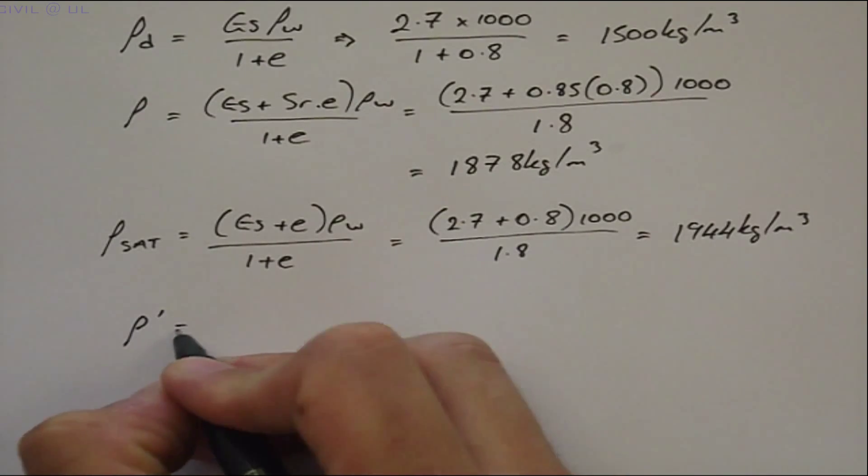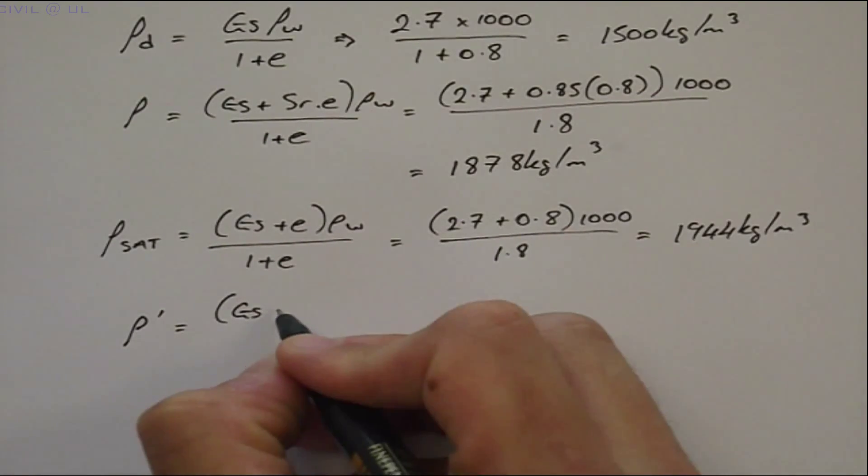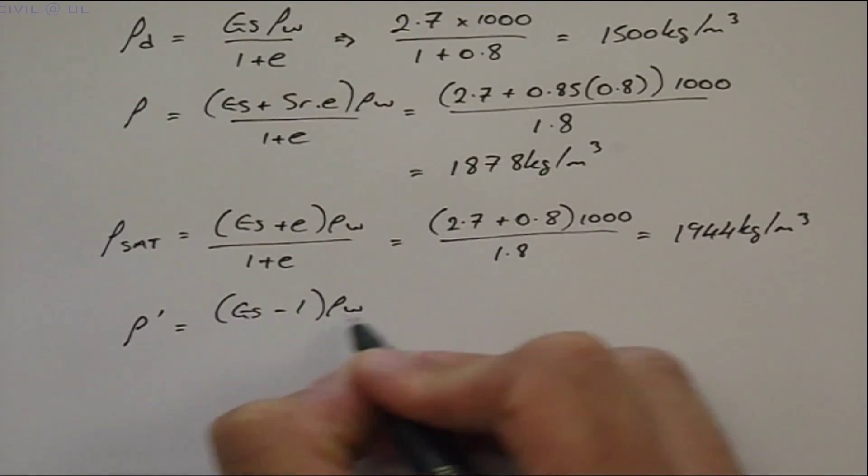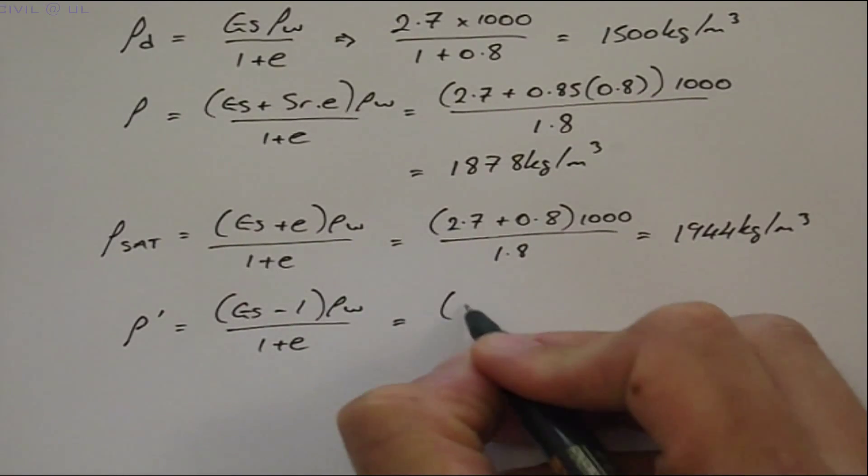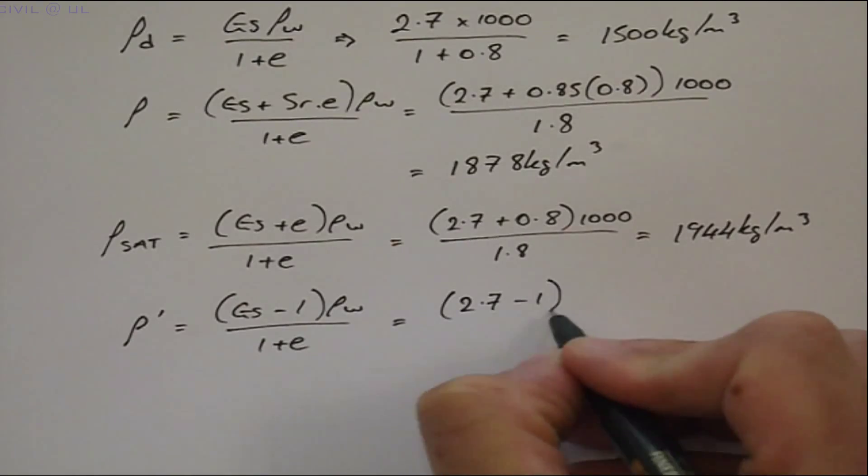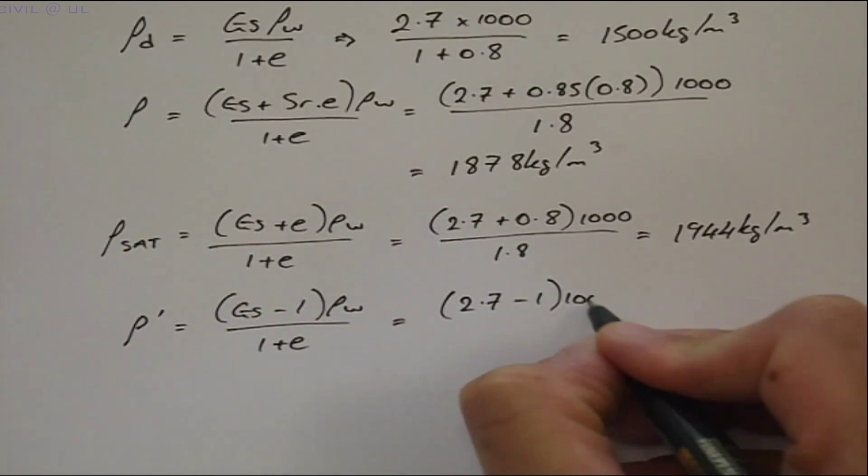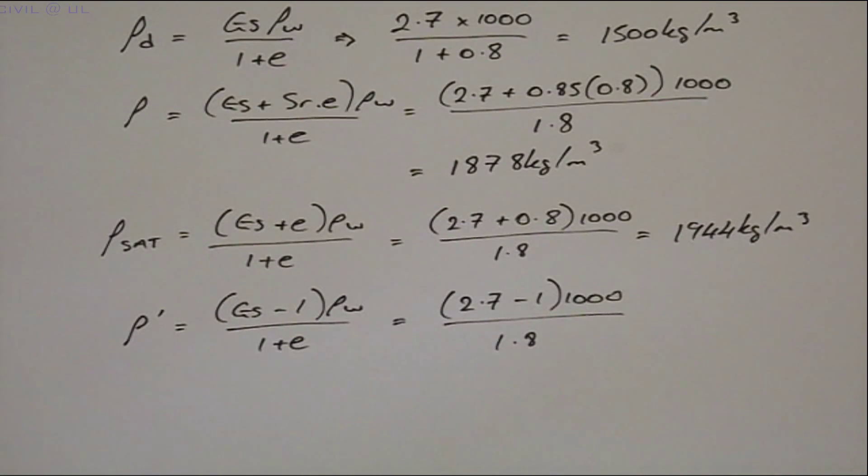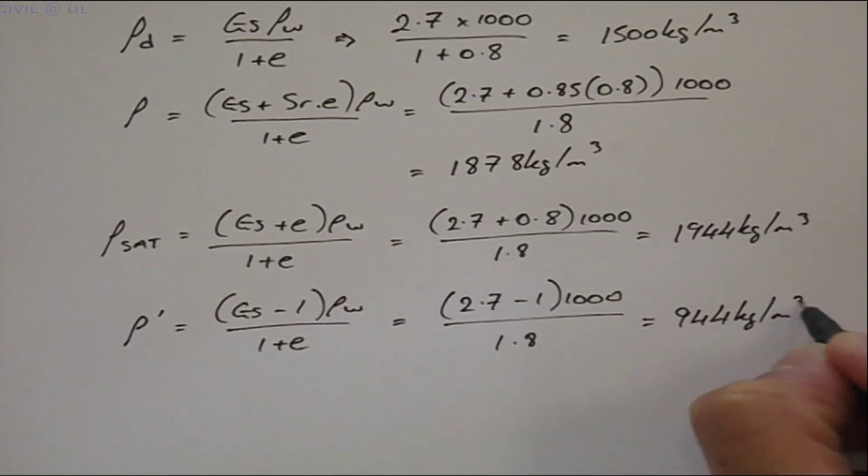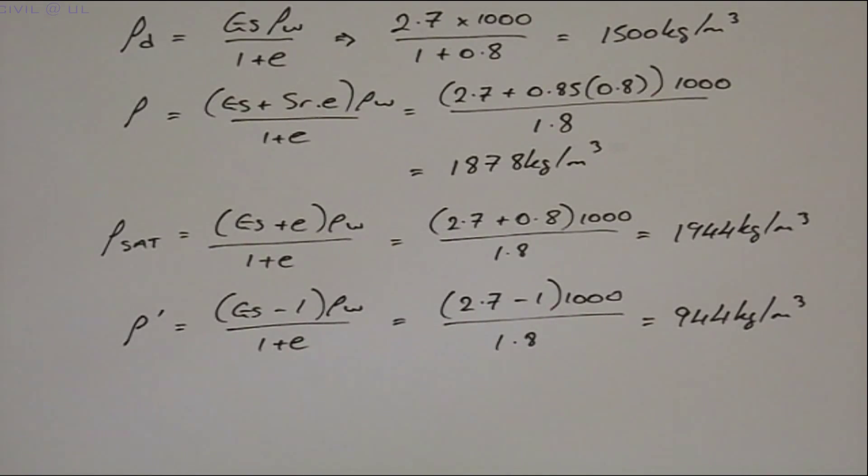And finally, the submerged density is given by GS minus 1, all multiplied by ρW, and divided by 1 plus E. Substituting, we get 2.7 minus 1, multiplied by 1000, and all divided by 1.8, giving us a submerged density of 944 kilograms per meter cubed.